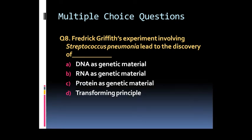Option C: Type R2 living and mouse resulting in dead. Option D: Type S3 heat killed plus type R2 living plus mouse equal to living. Question 8: Frederick Griffith's experiment involving streptococcus pneumonia lead to the discovery of: Option A: DNA as genetic material.